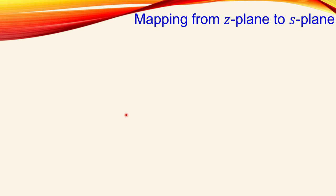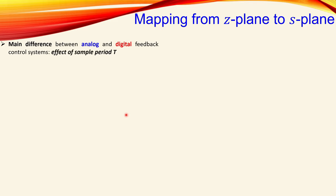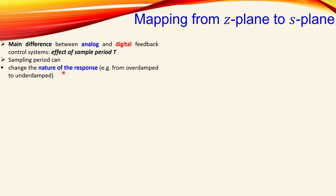In example number five, we start with the mapping of a z-plane to an s-plane first, because we have some additional information required before we move on with the actual example. The main difference between the analog and digital or discrete time feedback control system is the effect of the sampling period T. If T changes, your stability and all other effects can change.